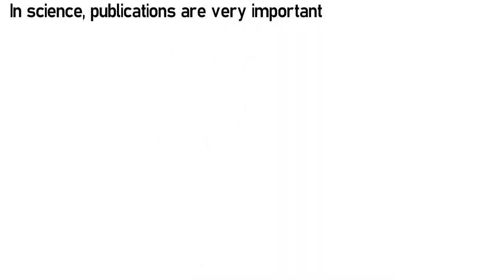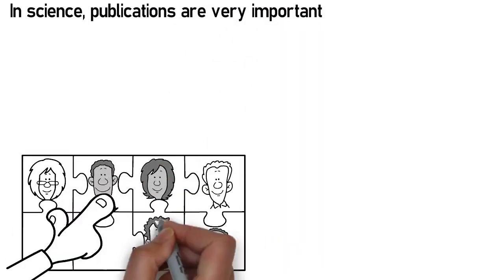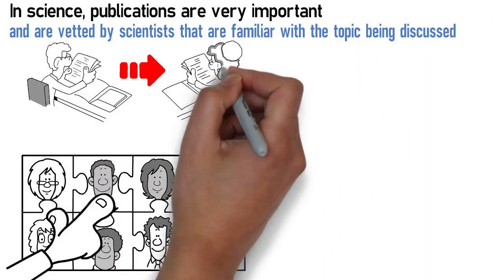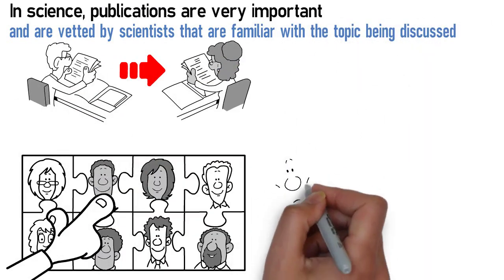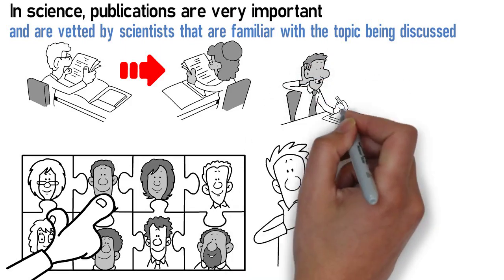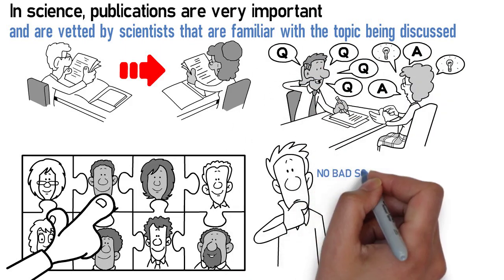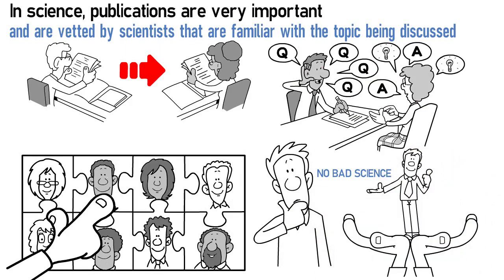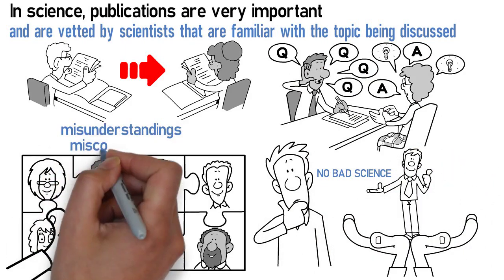In science, publications are really important and are vetted by a panel of scientists that are familiar with the topic being discussed before they make it to a journal. Why do they have to get vetted? We want to make sure that the experimental design and the questions being asked were legitimate and that no bad science is being shared with the outside world because that would just lead to misunderstandings and misconceptions.